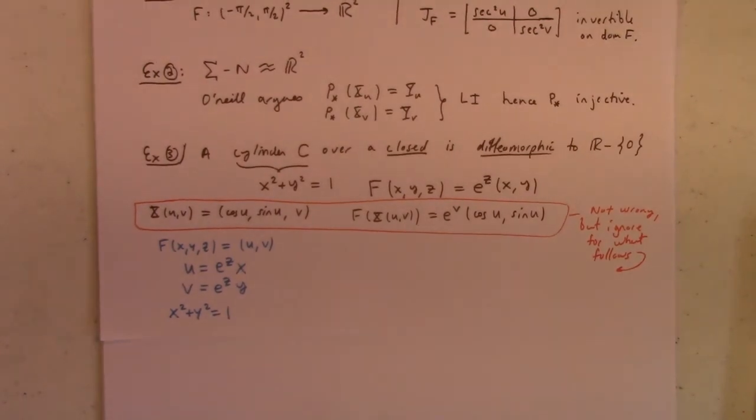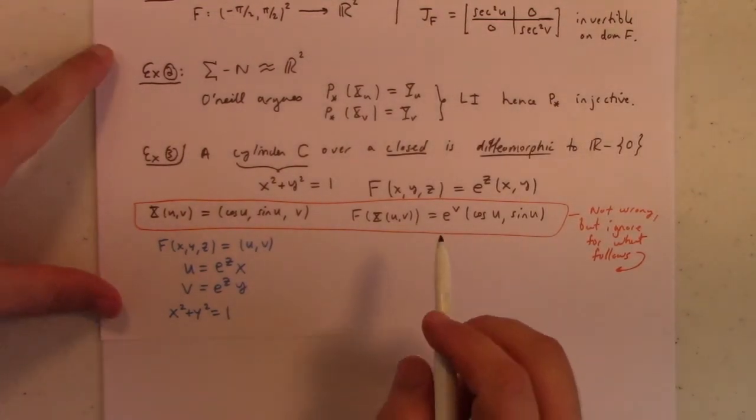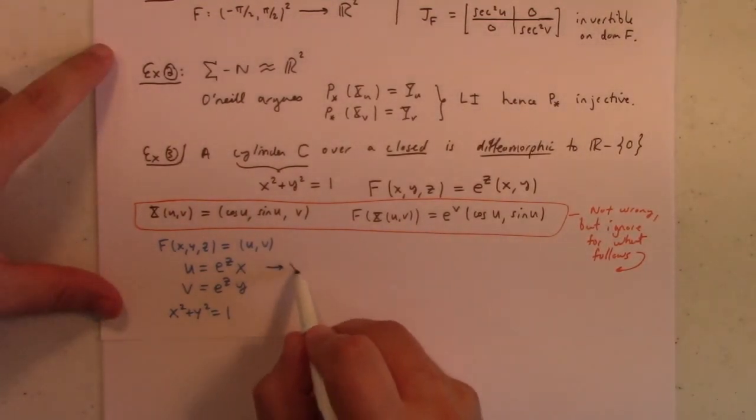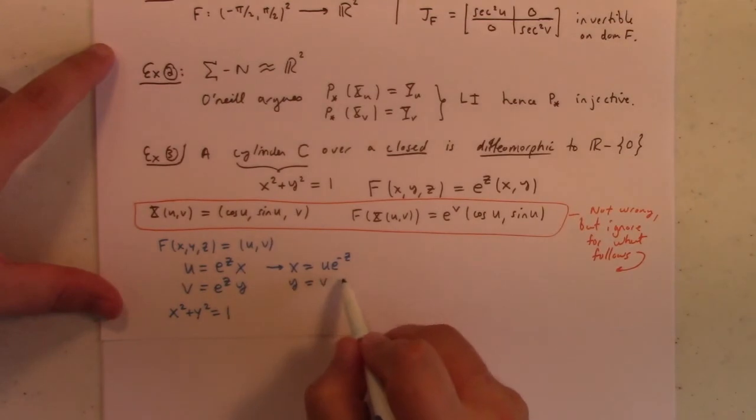I will start this again. All right. I'll take a phone call there. So, x squared plus y squared equals 1. But on the other hand, x is equal to u times e to the minus z. And y is equal to v times e to the minus z, right?